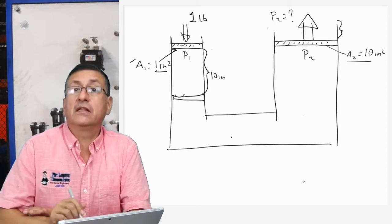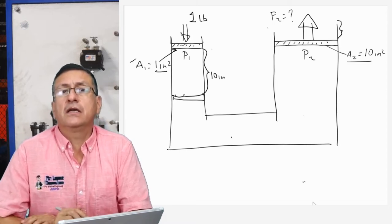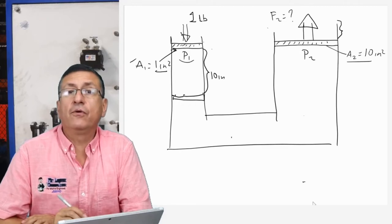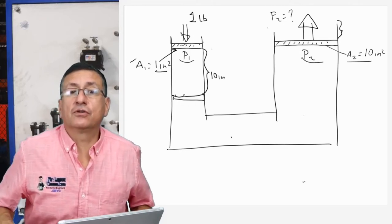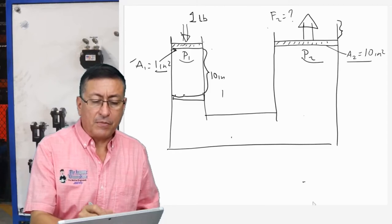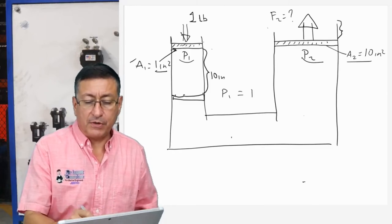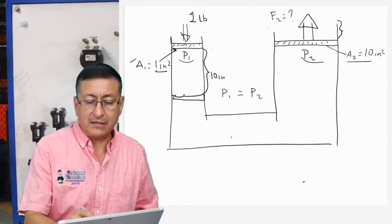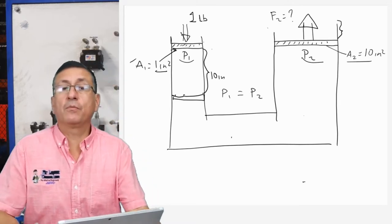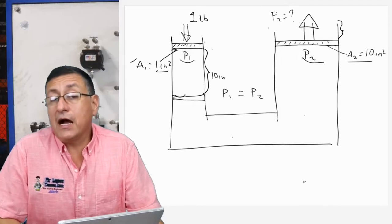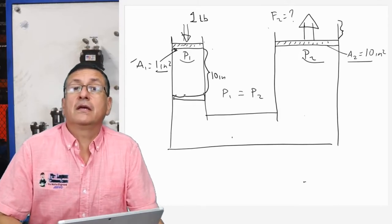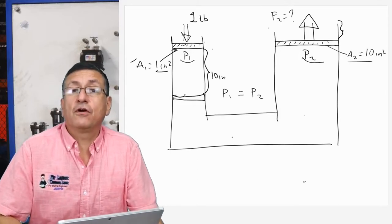The fluid internally in that container is a hydraulic fluid. The pressure is constant. What is the meaning of that? The pressure number one should be equal to the pressure number two. That's the starting point. We are going to start with that concept. According to Pascal's Law, what is the definition of pressure?